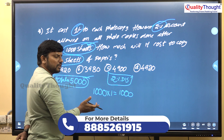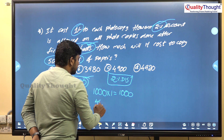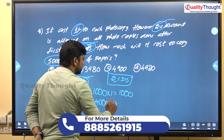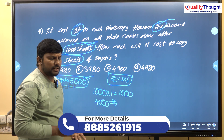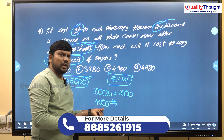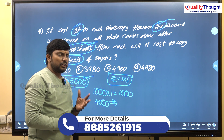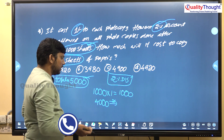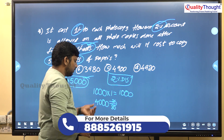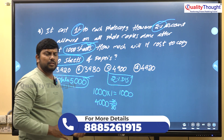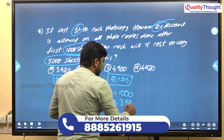The first 1000 sheets have no discount. The remaining 4000 sheets get a 2% discount. 1% of 4000 is 40 rupees; 2% is 80 rupees. So 4000 minus 80 equals 3,920 rupees.